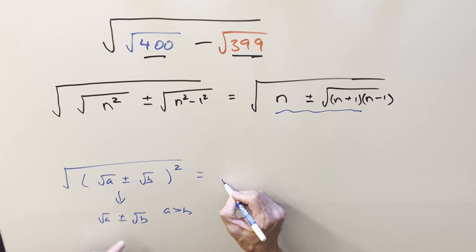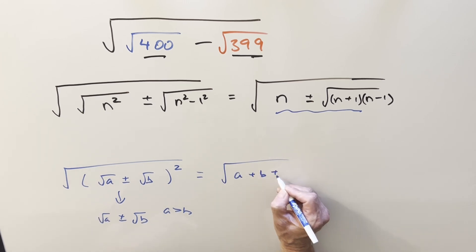Now when you multiply this out, just squaring it, you're going to get a plus b plus or minus two square root of a times b.